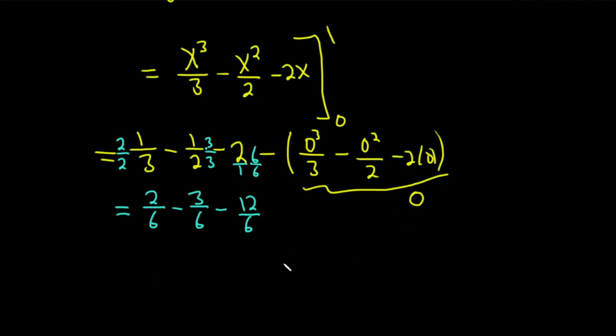Fractions. Fractions take a lot of practice. So we have 2/6 minus 3/6 minus 12/6. So 2 minus 3 is -1. So we have -1/6 minus 12/6. And then subtract these and you get -13/6. And that would be the answer to this problem. Kind of a little bit messy, but the idea is really simple, right?